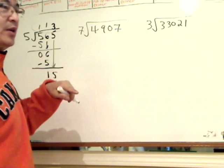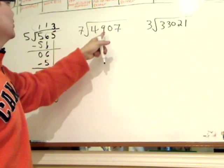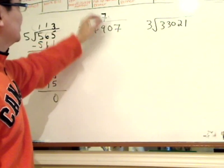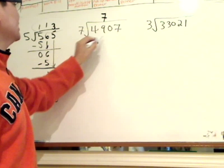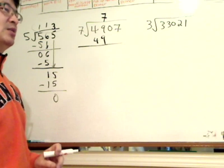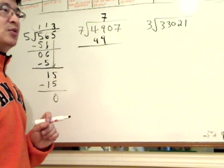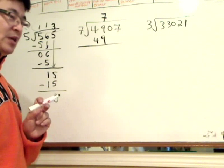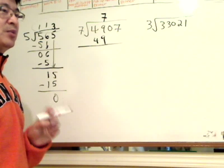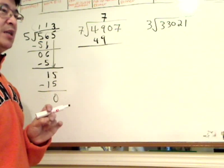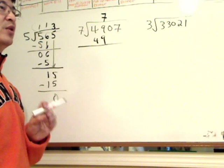7 go into 4. You can't do it. 7 go into 49, 7 times. 7 times 7 is 49. Notice how I did it pretty quick because I remember, this is what I'm telling students and parents, you've got to teach the student or your kid the multiplication because once you know your multiplication, division is very straightforward, it's easy.